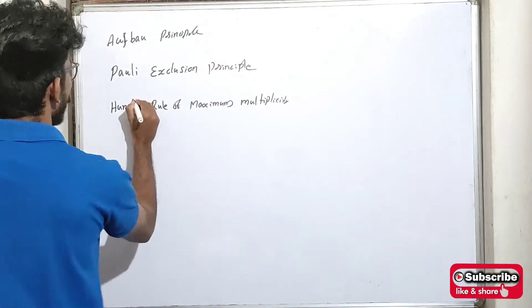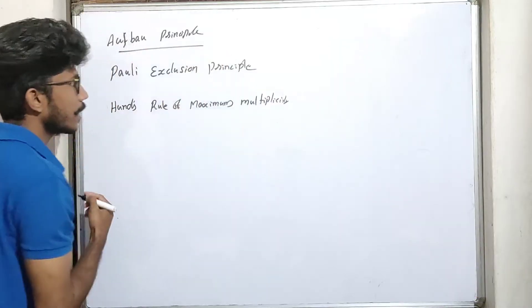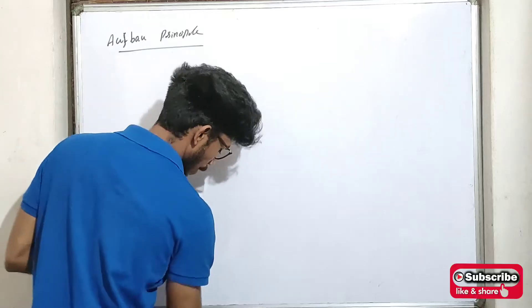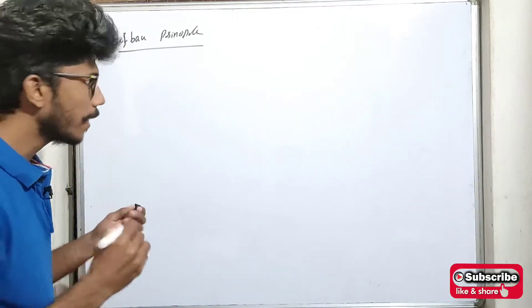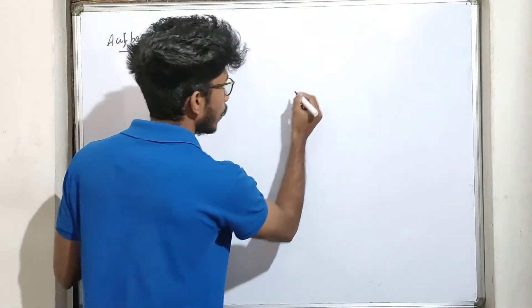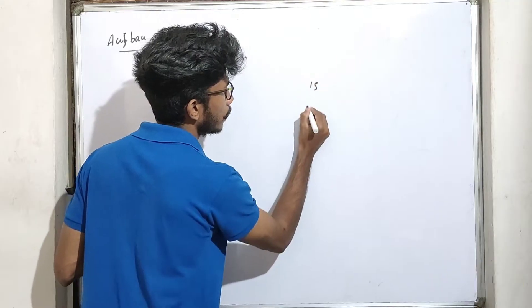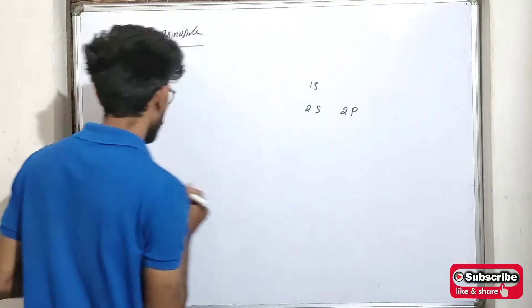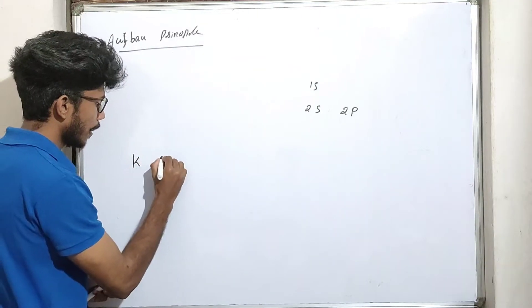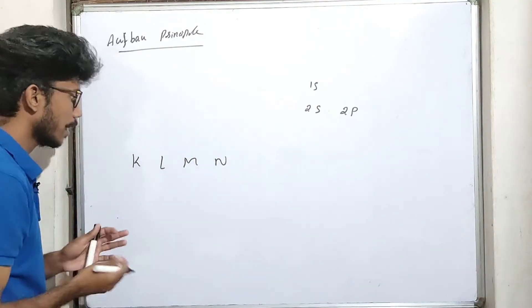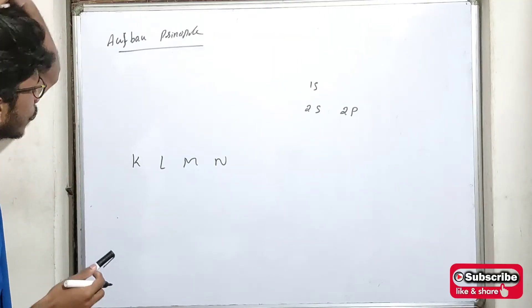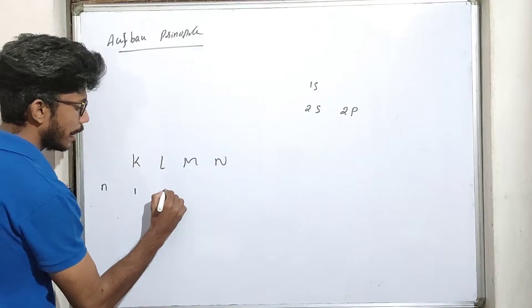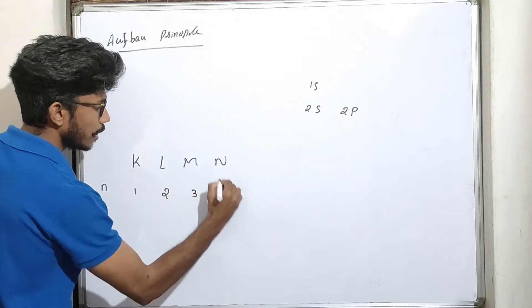Let's talk about the Aufbau Principle. The Aufbau Principle involves the filling order: 1s, 2s, 2p. The principal quantum number n gives us the shell: K shell is n=1, L is n=2, M is n=3, N is n=4.